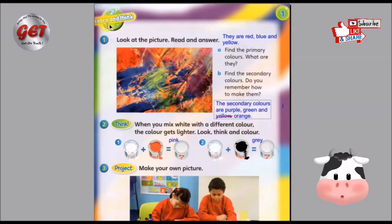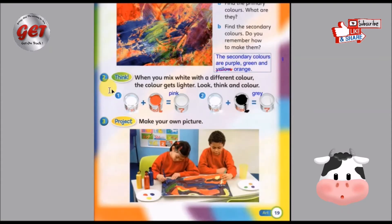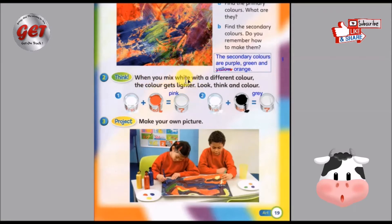Page 19, Part 2. 第二个部分 — Think. 这个部分呢，你要多思考，老师会带着你们教你们怎么样去思考，怎么样去得到答案。When you mix white with a different color, the color gets lighter. 当你用白色和其他的颜色混合，你就会得到一个比较浅的颜色。Lighter 就是浅的，比较浅的颜色。